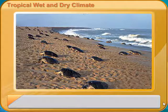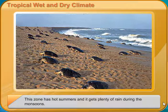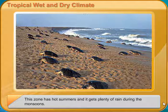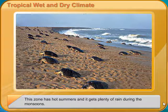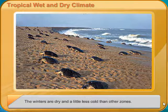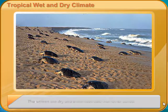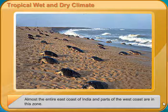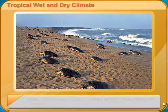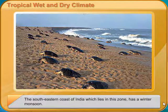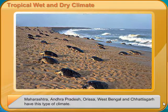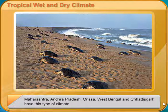Tropical Wet and Dry Climate: This zone has hot summers and it gets plenty of rain during the monsoons. The winters are dry and a little less cold than other zones. Almost the entire east coast of India and parts of the west coast are in this zone. The southeastern coast of India, which lies in this zone, has a winter monsoon. Maharashtra, Andhra Pradesh, Orissa, West Bengal and Chhattisgarh have this type of climate.